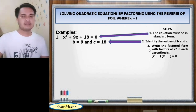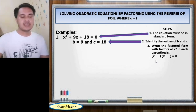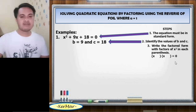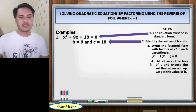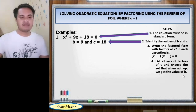Number 3, write the factored form with factors of x squared in each parenthesis, like this: quantity of x times quantity of x equals 0, with missing parts to fill in. Number 4, list all sets of factors of C and choose the set that, when added up, we get the value of B.